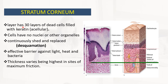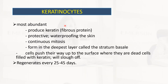The stratum corneum is the most superficial layer. It has multiple layers of dead cells filled with keratin. Cells have no nuclei or other organelles; they are continuously shed and replaced through desquamation. This layer is an effective barrier against light, heat, and bacteria, and its thickness varies, being highest at sites of maximum friction.